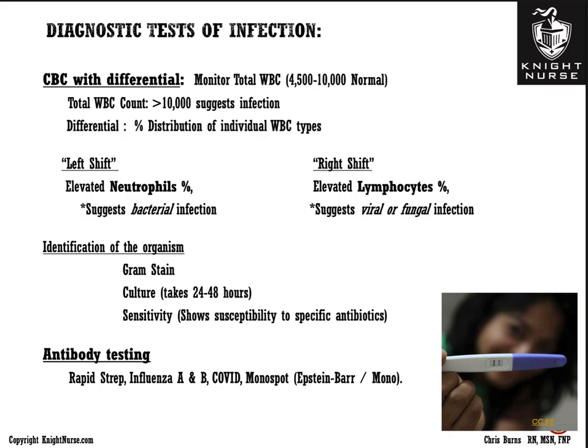Rapid antibody testing can also identify organisms. An antibody attached to a test strip binds the target antigen if present in the sample, producing a visible line. A control line always appears; a second line indicates a positive result. This method is used for rapid strep, influenza A/B, COVID-19, monospot for mono, and pregnancy tests — many types of tests use this antibody-based approach.